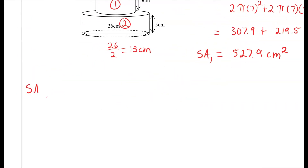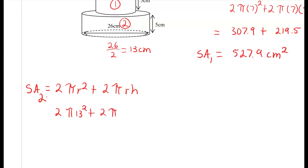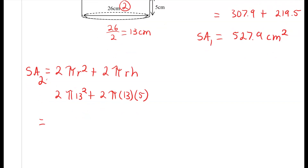For surface area of the second cylinder, we use the same formula: 2πr² plus 2πrh. Our radius this time is 13, so 2 times π times 13 squared plus 2 times π times 13 times 5. Calculating this as a whole gives 1,470.3 centimeters squared.